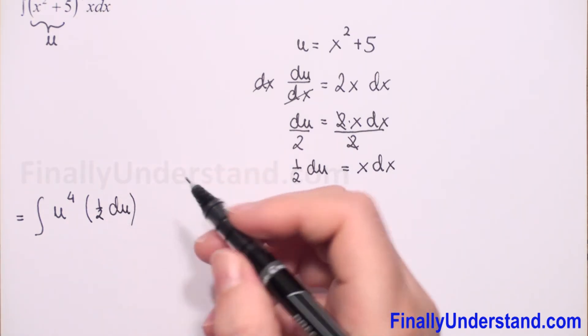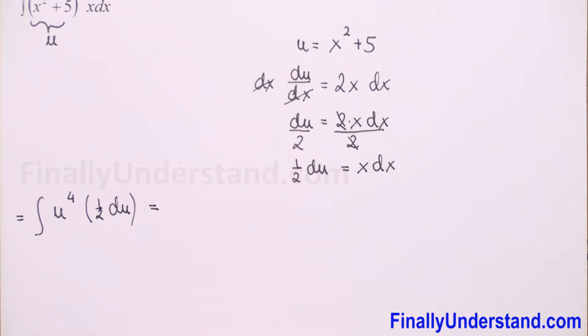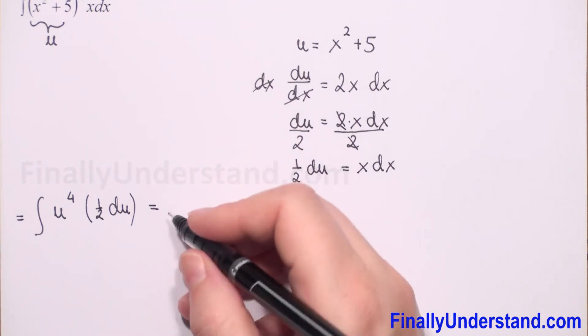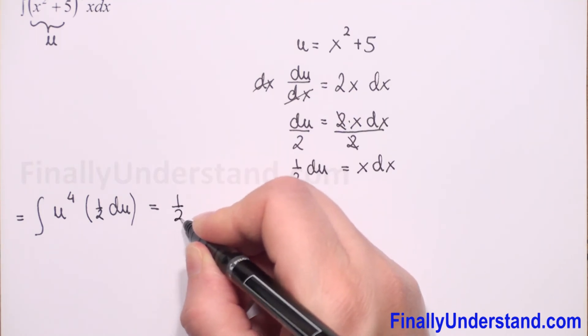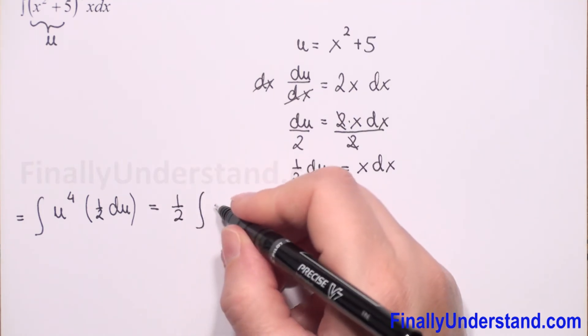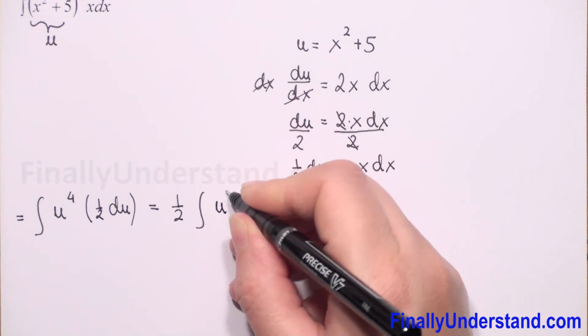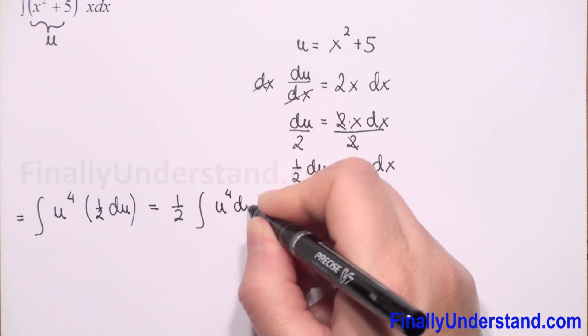So this is equal, we can rewrite our integral and put one half in front because this is constant. So we have one half and integral of u to the 4th power with respect to u.